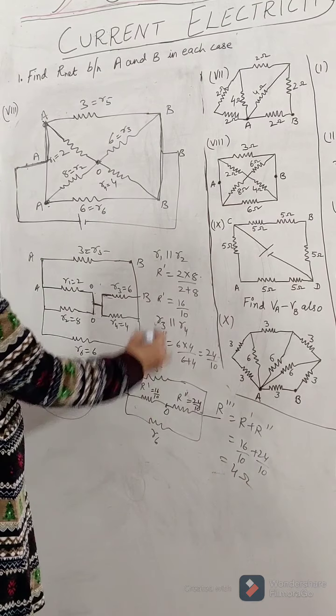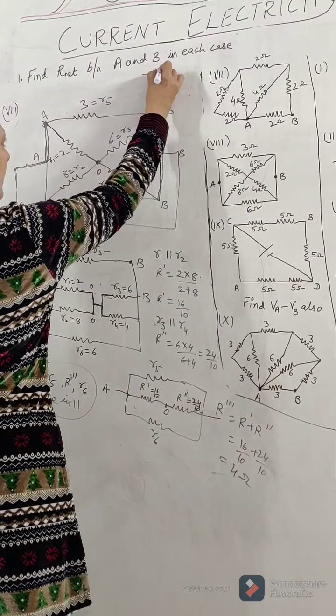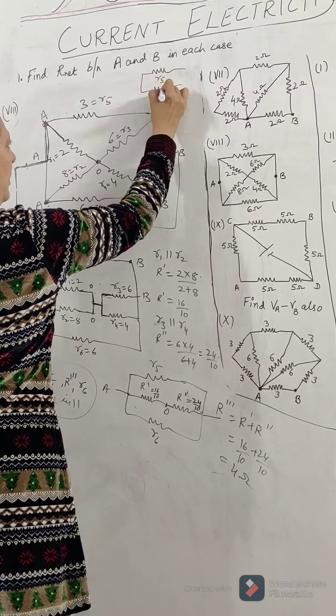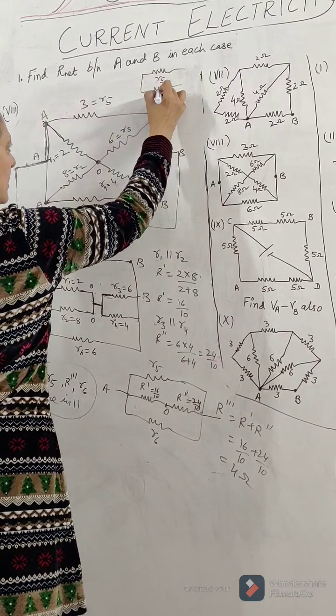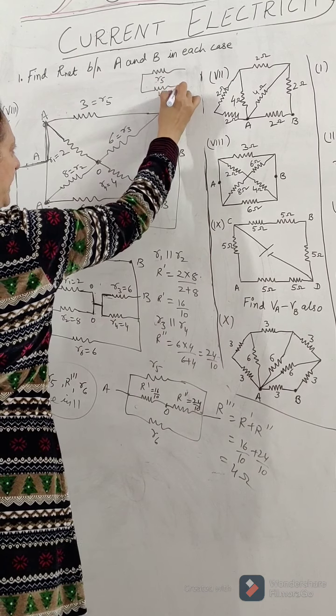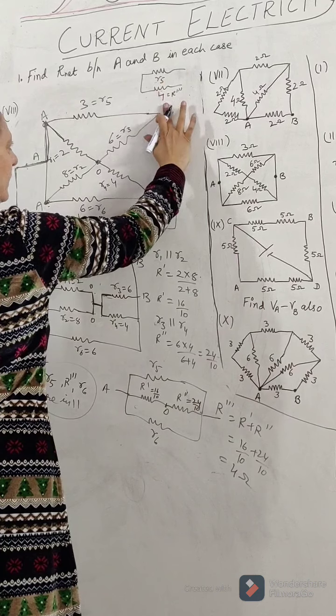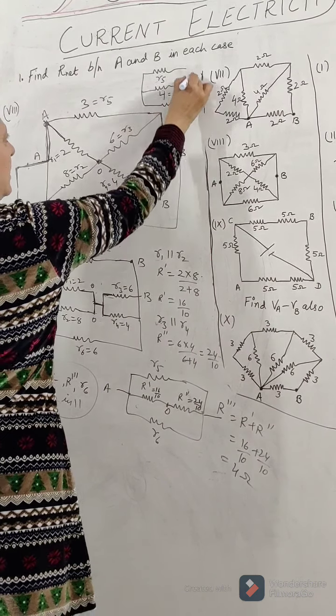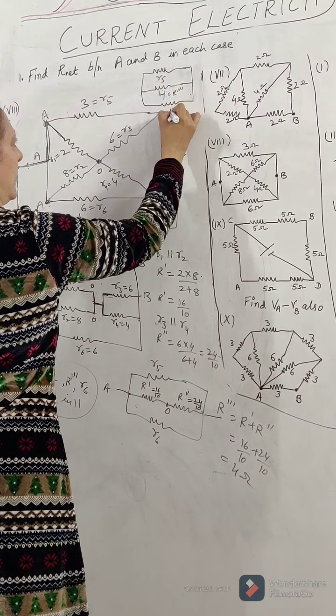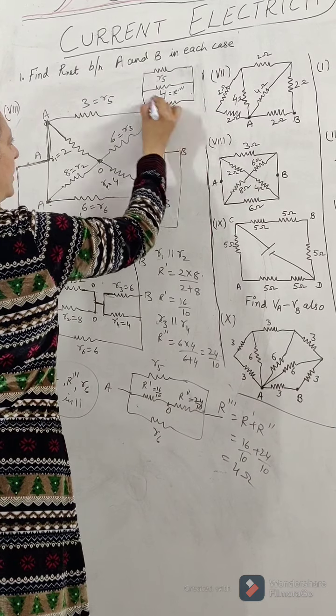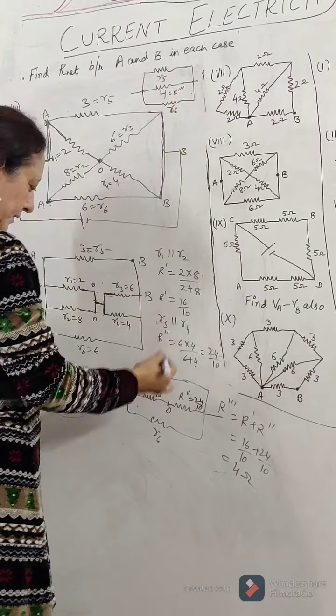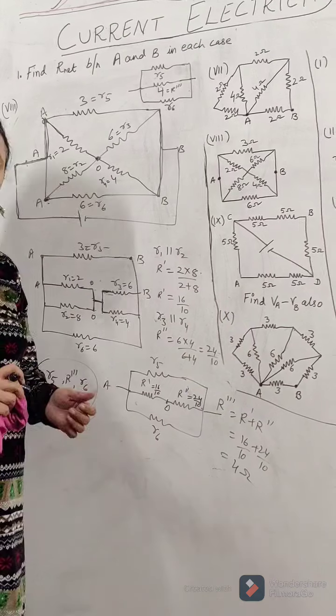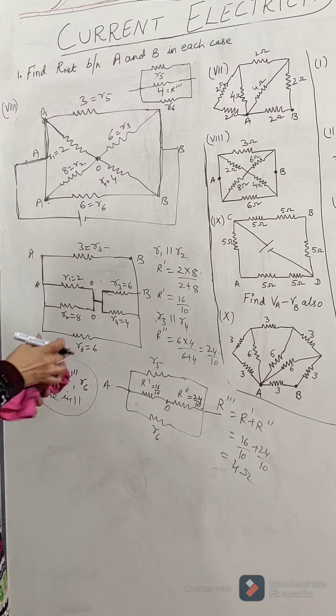So now the equivalent circuit is R5, 4 ohm (not R4), this is 4 ohm which is your R triple dash, and R6. They all are in parallel, and now you can find the parallel result of these 3 resistances. So its answer will be 4 by 3.